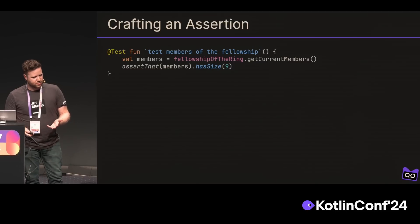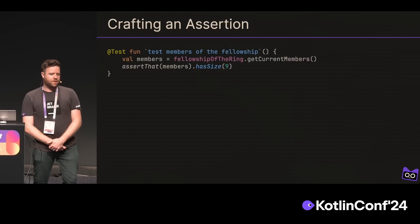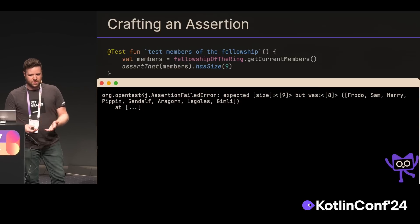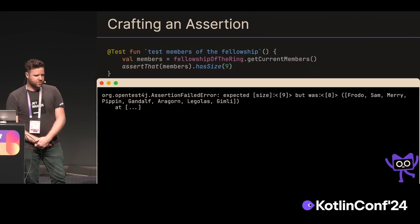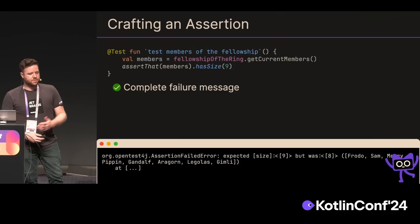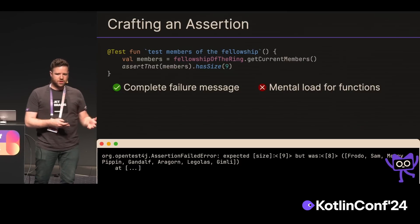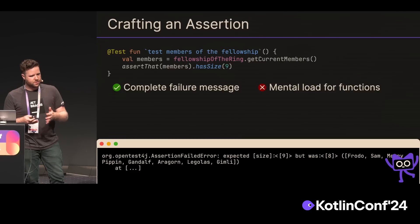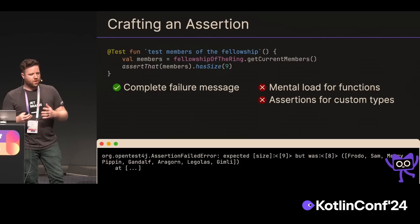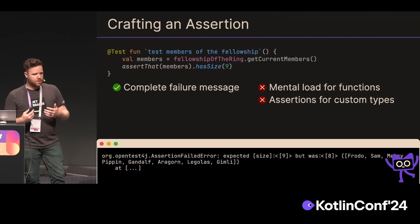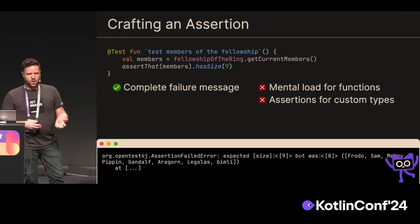So we might reach for a more complex assertion library. Here, as an example, I'm using AssertK. We can say here's my subject — members — and I want to assert that the size is 9. This gives us a really useful error message telling us what the actual size was, what the expected size was, and it provides a toString of the subject. So we again have a nice complete error message. But now we've moved away from just the common logic we'd naturally use in production code to a whole set of extension functions that we have to remember or look up for all the different cases in our tests. And while AssertK provides many useful extension functions for common built-in types, if we have our own custom types, this quickly becomes a different kind of burden where we have to write our own extension functions.